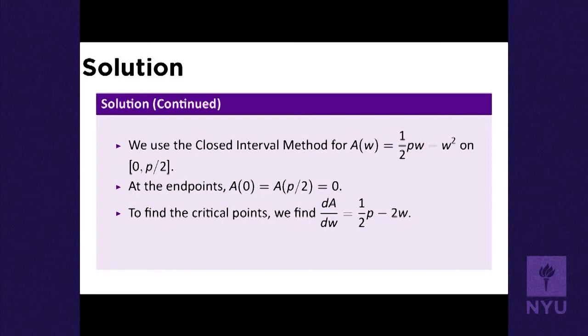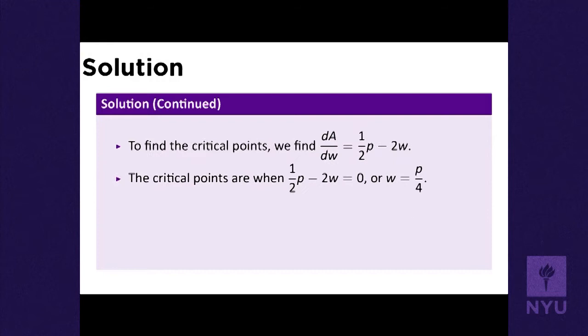The critical points are solutions to the derivative being equal to zero. The derivative dA/dW is one-half P minus 2W — just use the power rule. Setting one-half P minus 2W equal to zero and solving for W gives W = P/4.